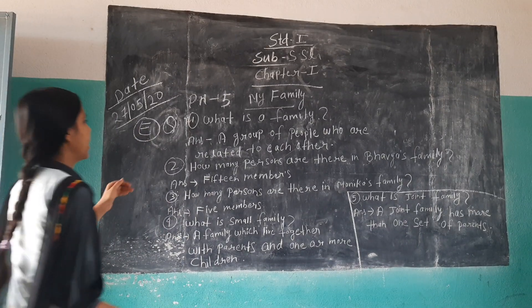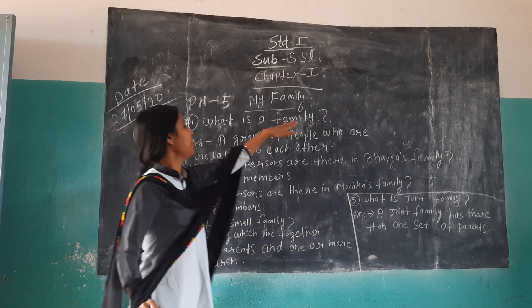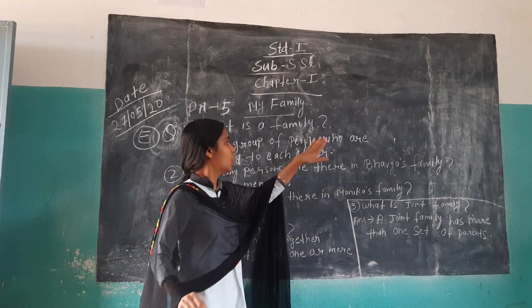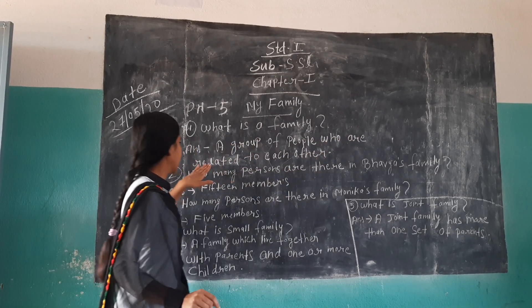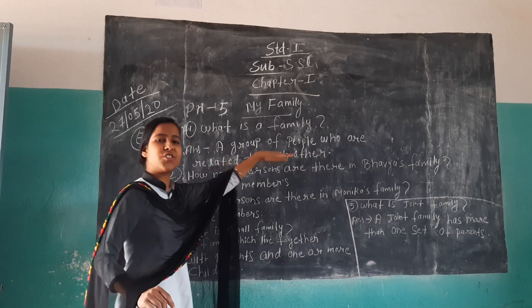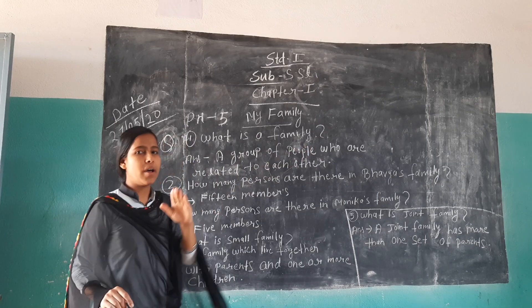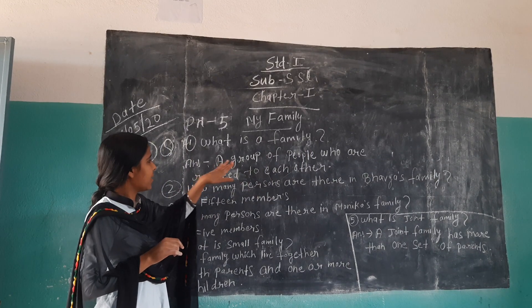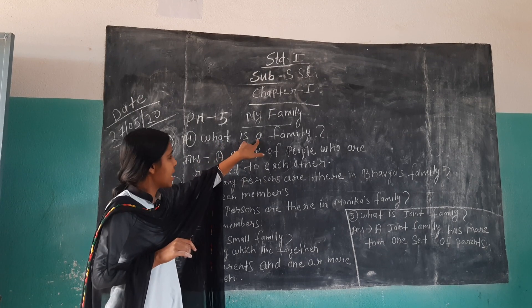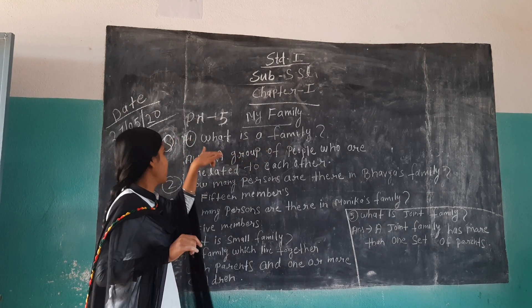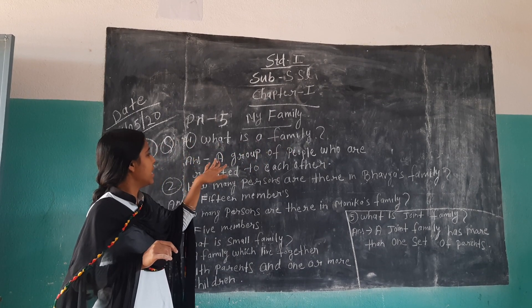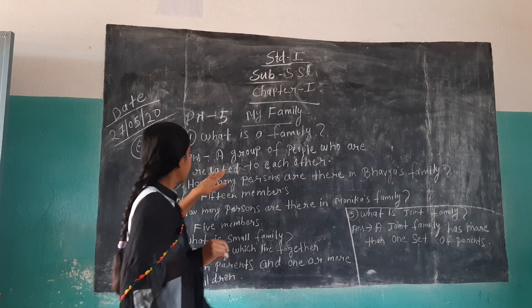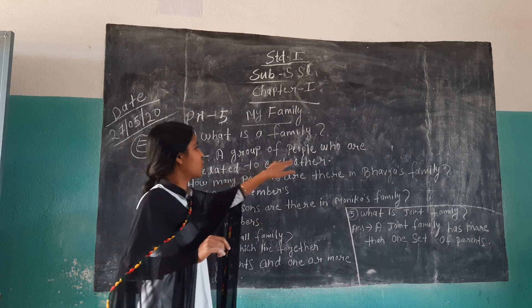Short answer: What is your family? A group of people who are related to each other is known as a family. Number 1 question answer: A group of people who are related to each other.